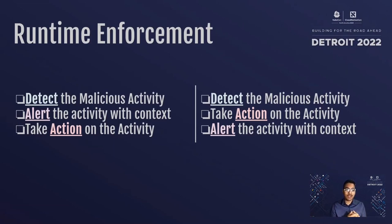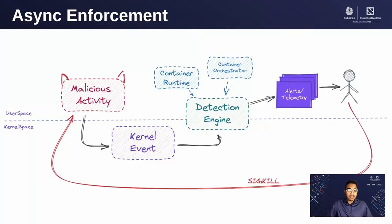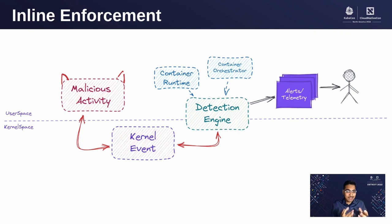So let's see what we need to enforce this fine-grained access control at runtime. There are two ways: once we detect malicious activity, we alert and take action after receiving the alert — this is async enforcement. Our detection engine receives the kernel event, alerts us, and we terminate the activity. But by the time this entire cycle happens, the malicious activity could have already sneaked into deeper areas of our container. The other method is inline enforcement: as soon as we detect malicious activity, we deny it then and there, and then receive the alert for further investigation.